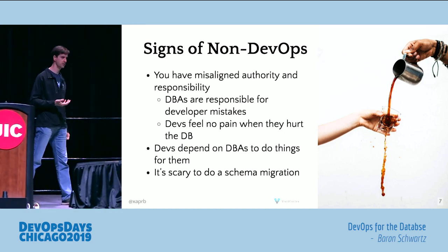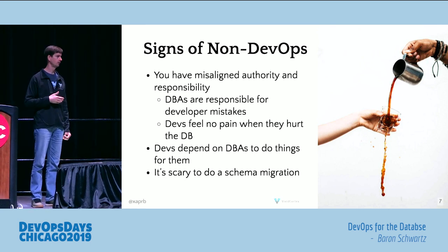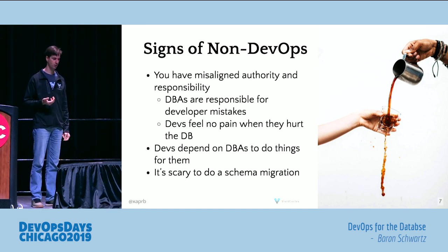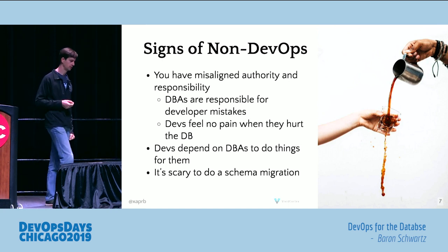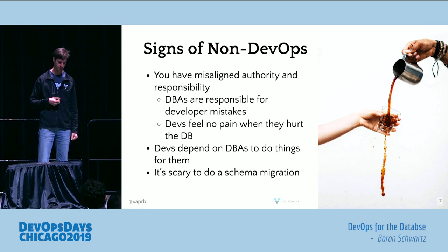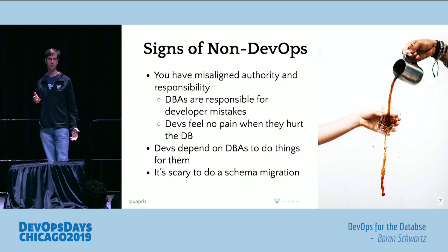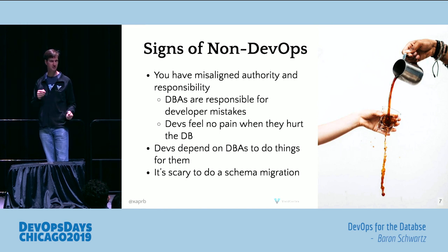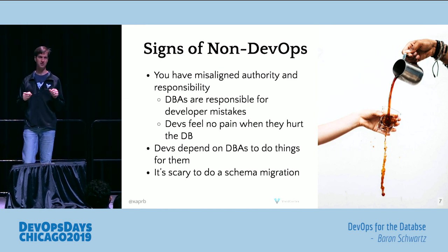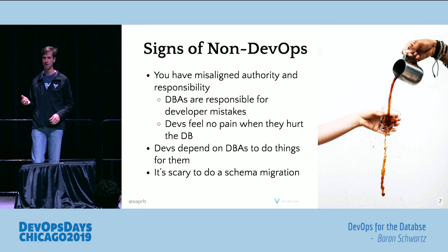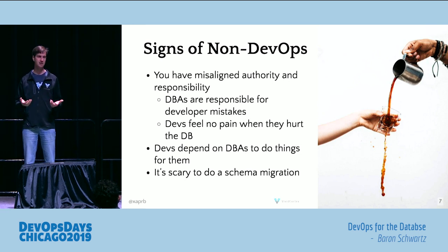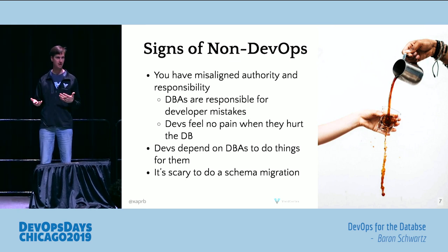If developers can't self-service — can't provision, can't change, can't observe in production how their services and queries are performing — that's not only an inefficiency and a bottleneck, but a real problem for the org. One of the clearest ways to see this is if people are afraid of changing the database schema. Schema migrations exist even if you have a schema-less database — there is still schema, it just lives only in the application. If shipping a new version of the application that treats data differently is scary and done less frequently because of that, it's a form of dysfunction.